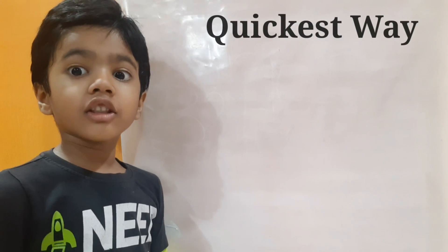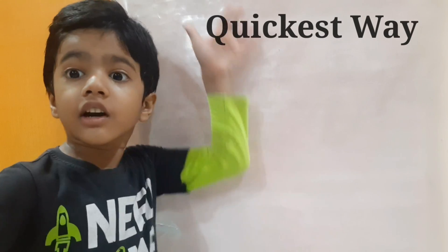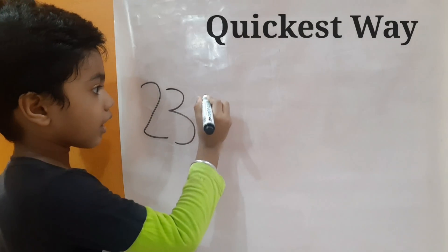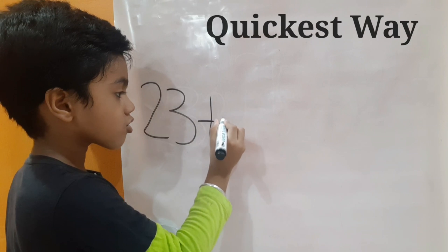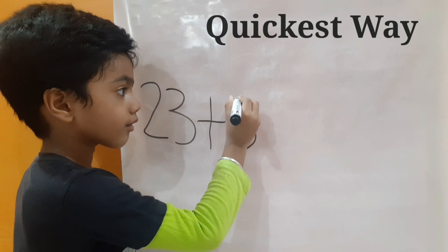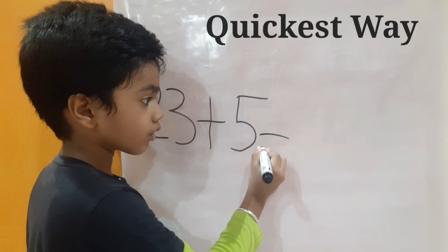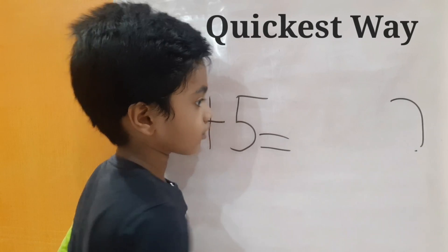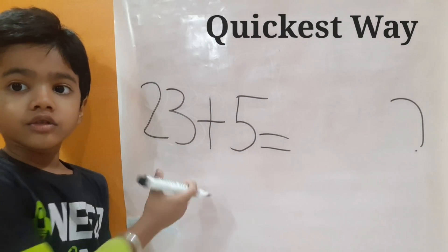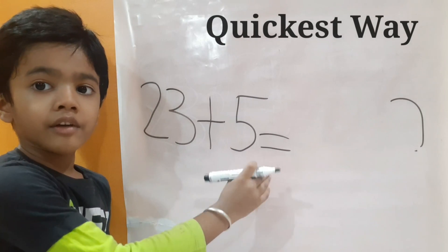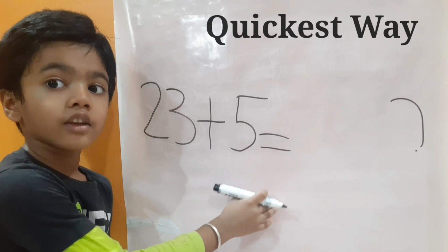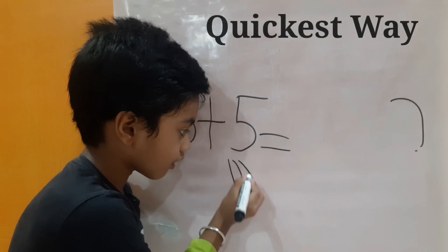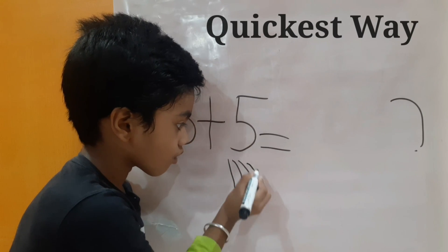Let's take another example. This time we will take a bigger number: 23 plus 5 equals to how much? On the left side we have 23, so let's leave 23. On the right side we have 5, so draw 5 lines below 5: 1, 2, 3, 4, 5.